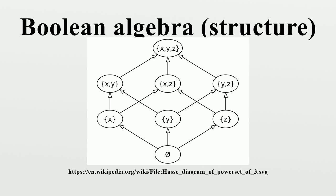It then follows that f(¬a) = ¬f(a) for all a ∈ A. The class of all Boolean algebras, together with this notion of morphism, forms a full subcategory of the category of lattices.